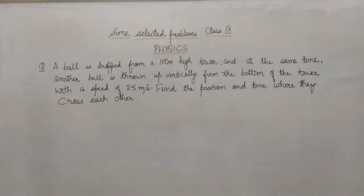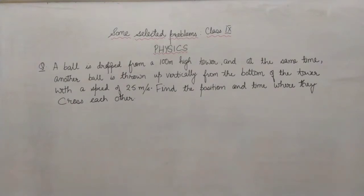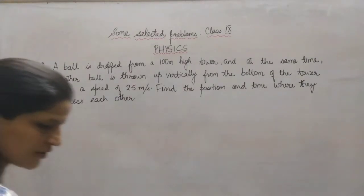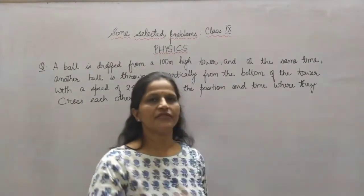Hello students, welcome back. Today we are going to discuss another problem of physics from class 9 NCERT. The question reads as: a ball is dropped from a 100 meter high tower, and at the same time another ball is thrown up vertically from the bottom of the tower with a speed of 25 meter per second. Find the position and time where they cross each other. This is a common question from the chapter on gravitation in NCERT.